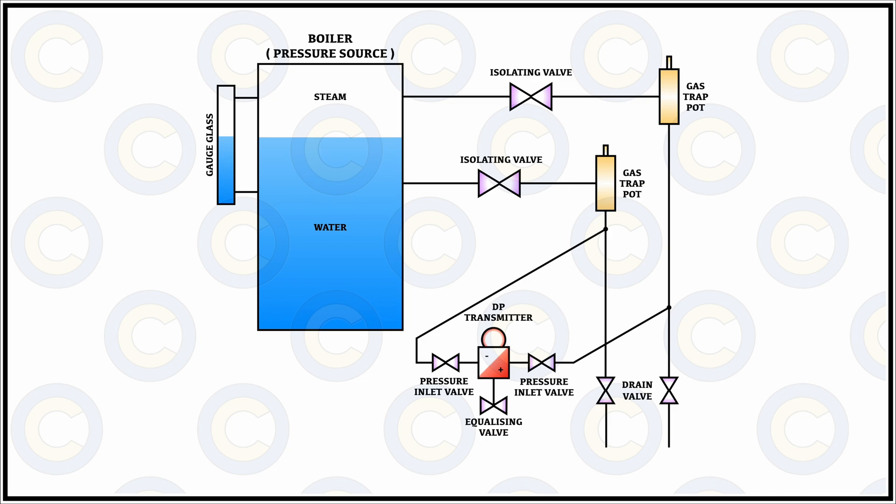Similarly the low pressure side would also be drained and it would mean that the DP cell is now properly isolated and the line is drained for the process.